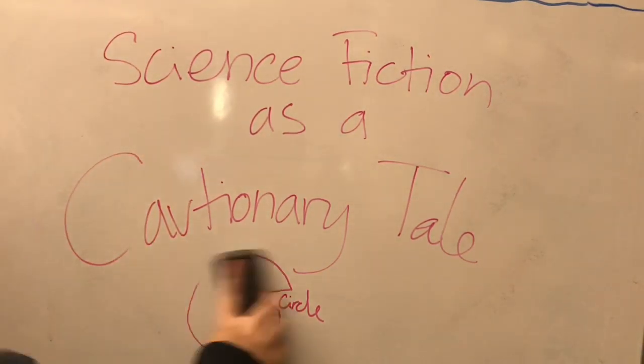The Circle, a science fiction novel by Dave Eggers, focuses on the idea of constant surveillance, similar to the idea of the panopticon.